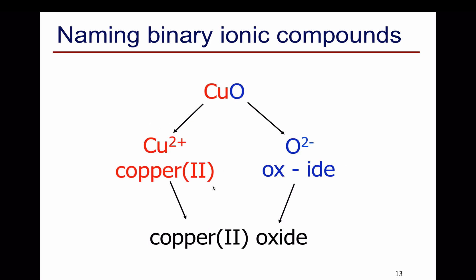CuO. It contains one O2-, and so the metal must have a charge of 2+ to match it. It's again copper2+, copper(II). The anion is oxide, so we have the name copper(II) oxide.